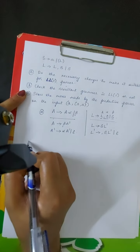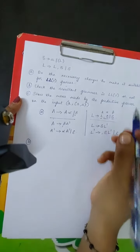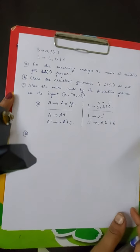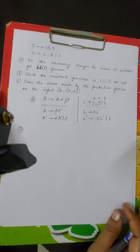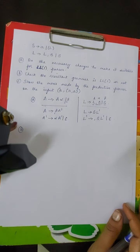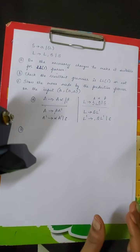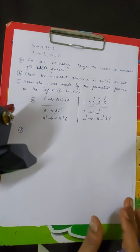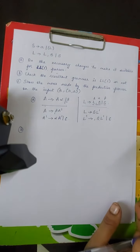Now let us move on to the second question: check whether the resultant grammar is LL(1) or not. To check this, we need to write the predictive parsing table. If any cell in the predictive parsing table has more than one production for the same terminal, then the grammar is not LL(1). For writing the predictive parsing table we first need to compute the FIRST and FOLLOW sets.